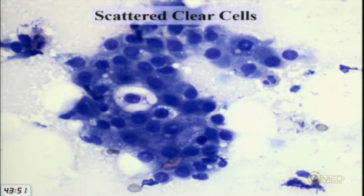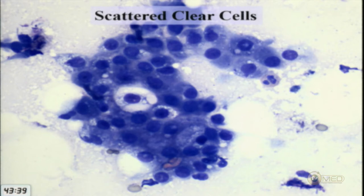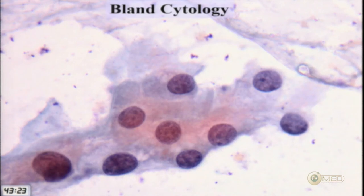Some cells surrounding a clear-cytoplasm cell had a vacuolated look. The question is: are these mucin-producing cells or sebaceous cells? If they're mucin-producing, I'm worried about mucoepidermoid carcinoma. It's a little difficult to know.